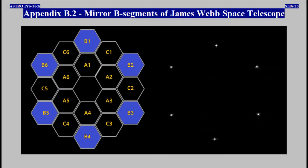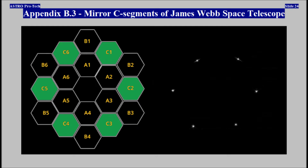Appendix B2: mirror B segments of James Webb Space Telescope shown. Appendix B3: mirror C segments of James Webb Space Telescope shown.